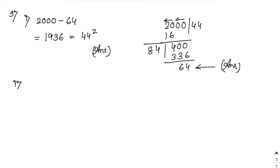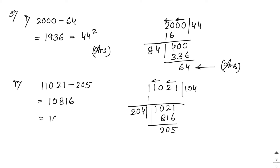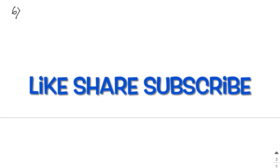For the fourth number, 11021: make pairs 1, 10, 21. 1×1=1, first digit 1. Bring down 10. Double of 1 is 2. Try 20×0=0, remainder 10. Bring down 21 giving 1021. Try 204×4=816. After subtraction, remainder is 205. So the least number to subtract is 205. After subtracting: 11021 minus 205 = 10816, and the square root of 10816 is 104.